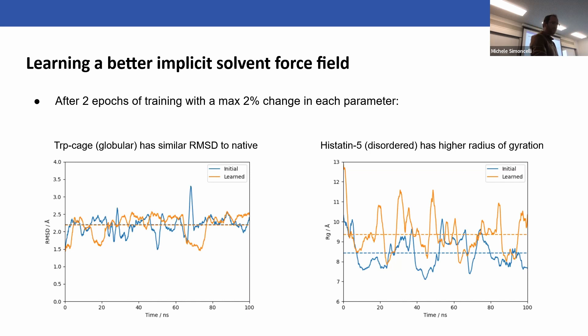In conclusion, differentiable molecular simulation is a very general approach to learning the parameters of force fields. It's really enabled by recent advances in hardware, software, and the huge explosion we're seeing in biological data. In previous work we showed that a coarse-grained force field was learned that matches protein data bank statistics and can fold small proteins. Now current work is looking at implicit solvent force fields and how they can work on a wider variety of systems. I think overall the guiding point here is: can we keep the deep learning revolution interpretable? It's all well and good training massive neural networks, but what we want is interpretable physical models that we can run.